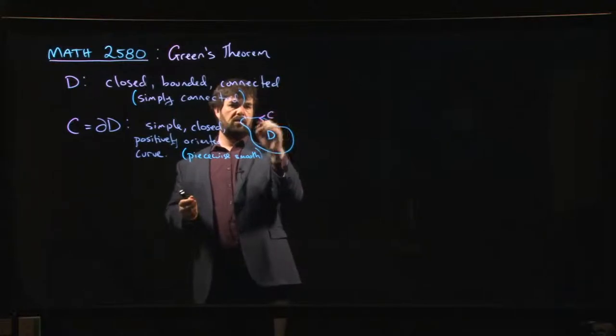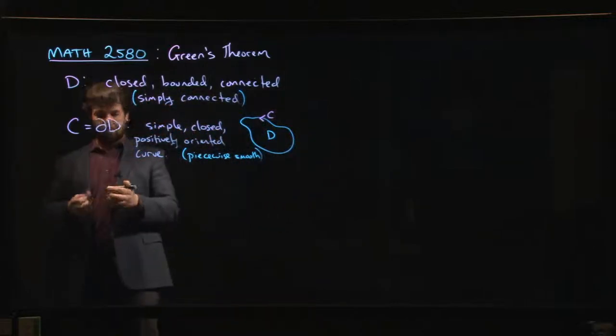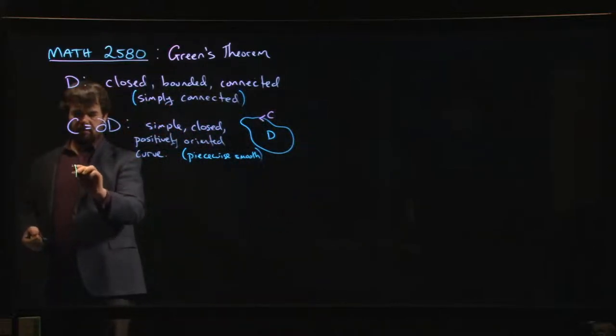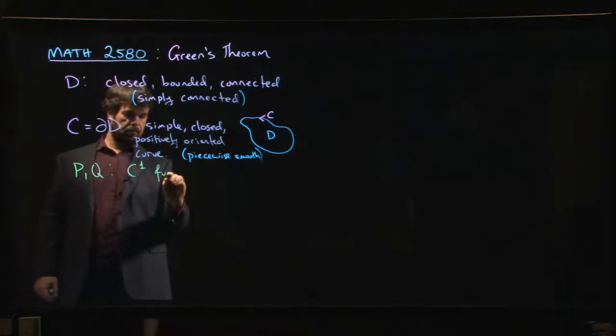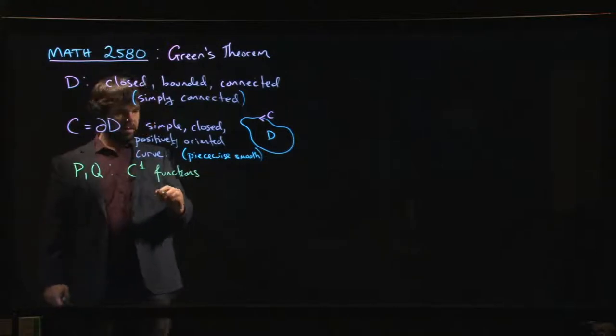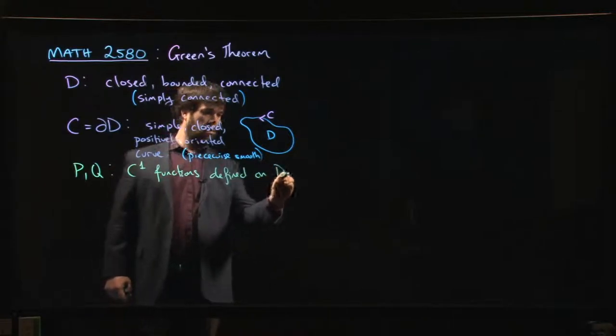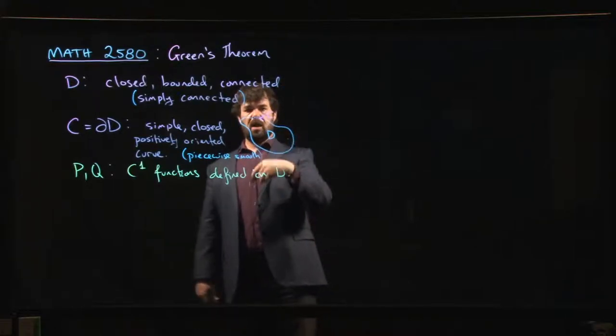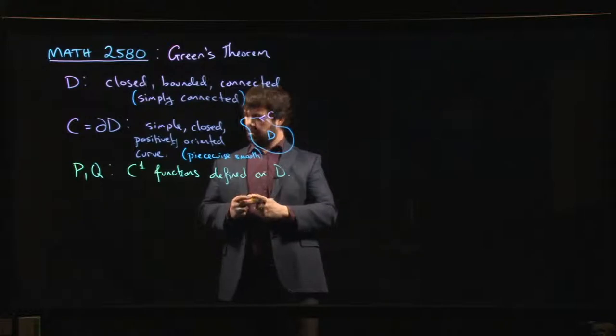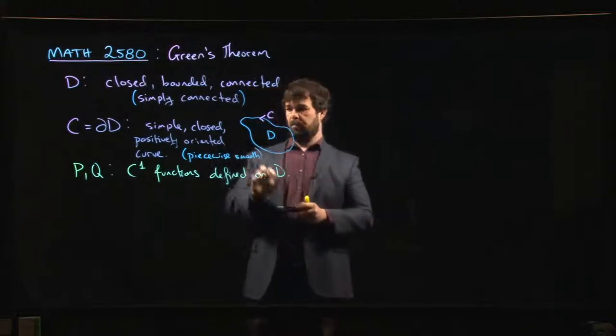We've got functions P and Q. P and Q are going to be C1 functions defined on all of D. In particular, that means they have to be defined along C and everywhere on the region inside of C. This domain condition is actually quite important.